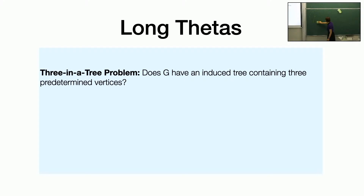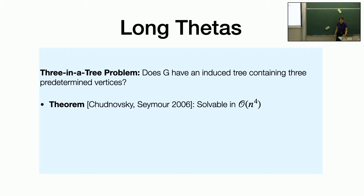The three-in-a-tree problem is: given an input graph and three specific vertices, is there some induced tree containing those three vertices? That was solved by Chudnovsky and Seymour in 2006 — they got an O(n^4) algorithm by getting a decomposition theorem for graphs which do not contain such an induced tree, which turn out to behave kind of like a line graph of a bipartite graph. Then in 2020, Lai, Liu and Tharap got an O(n^2 log^2 n) algorithm by improving on the decomposition theorem and making bits of the algorithm more efficient.